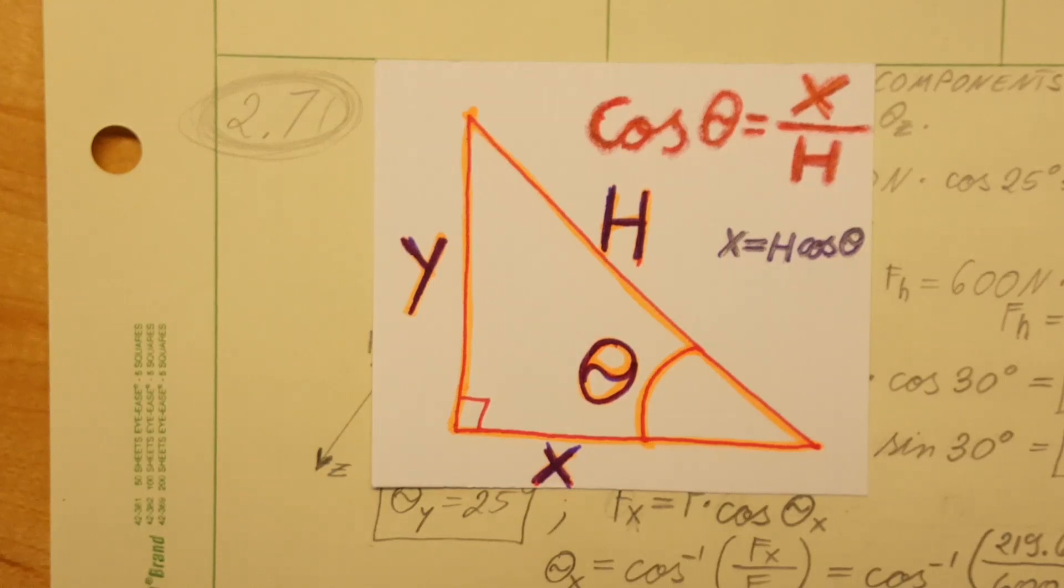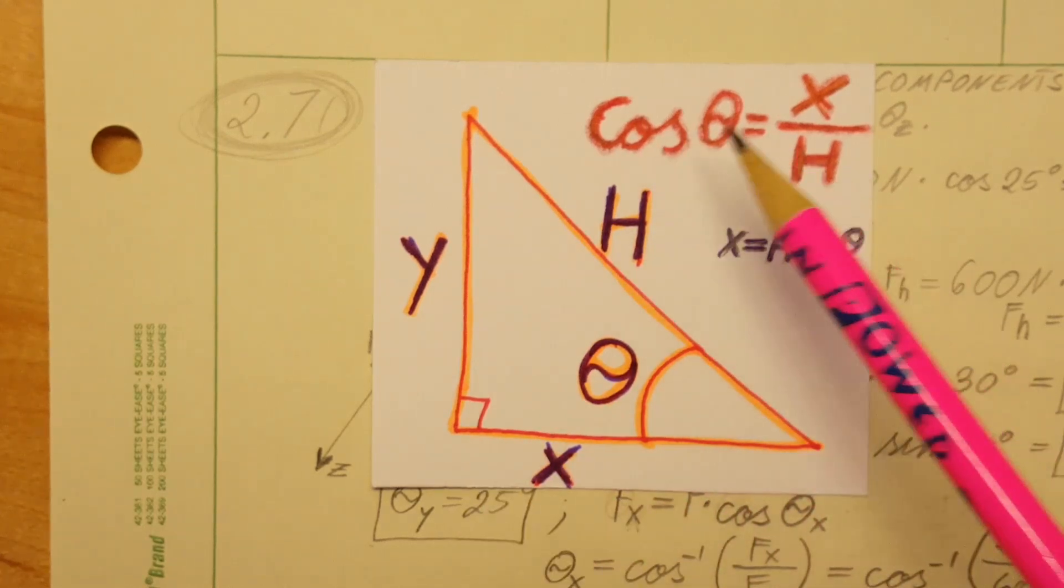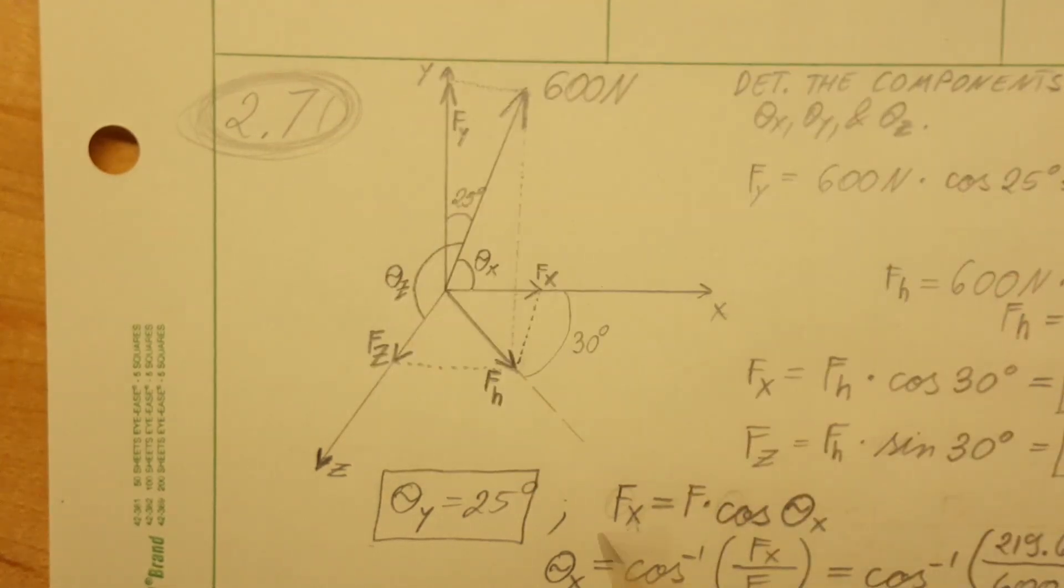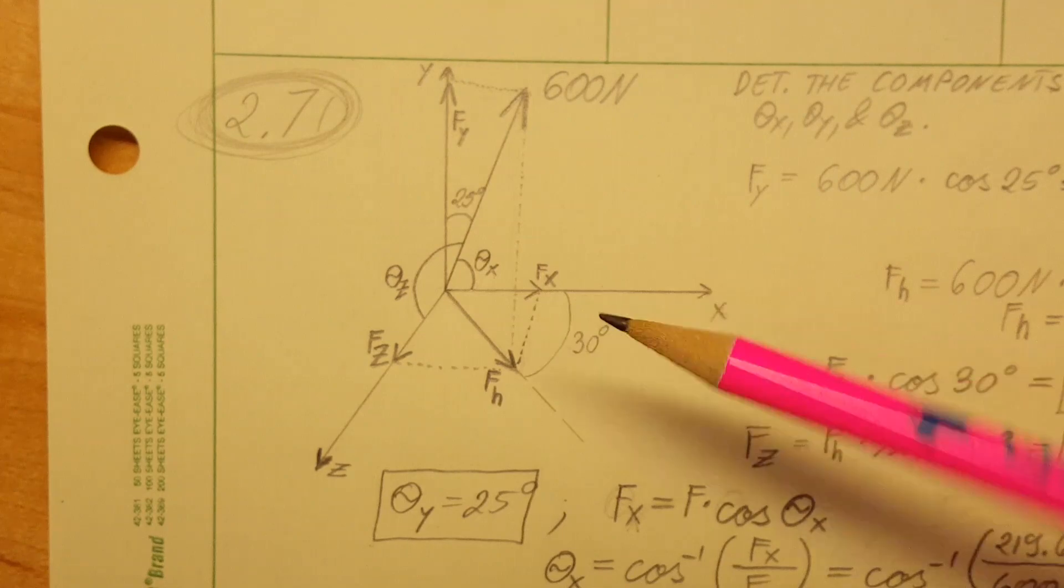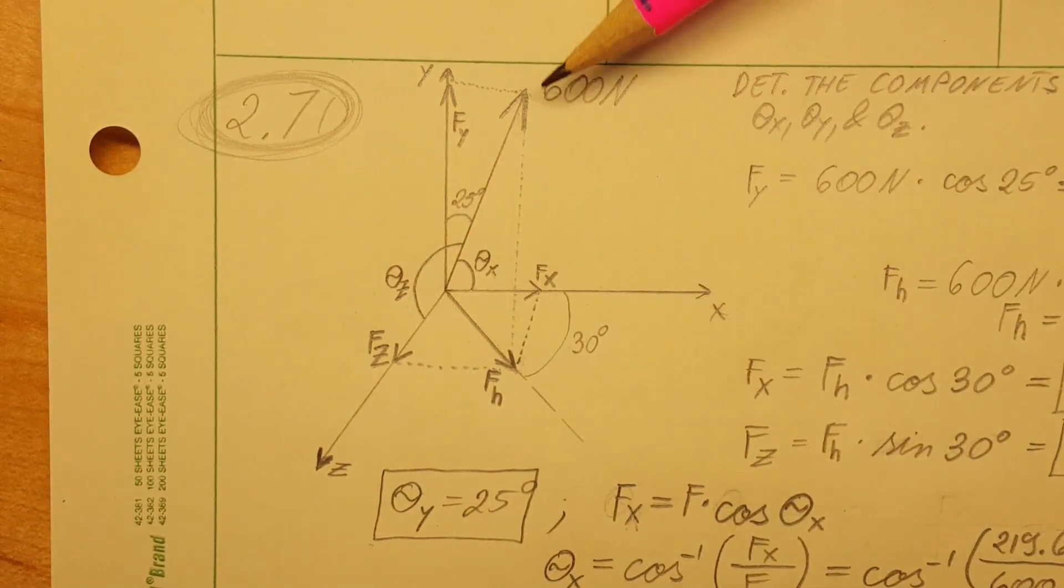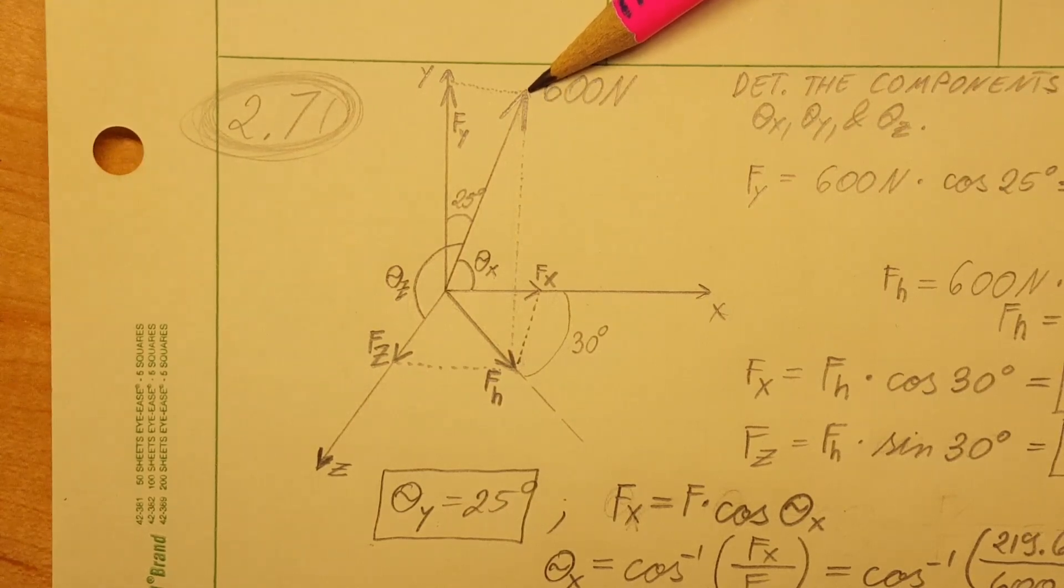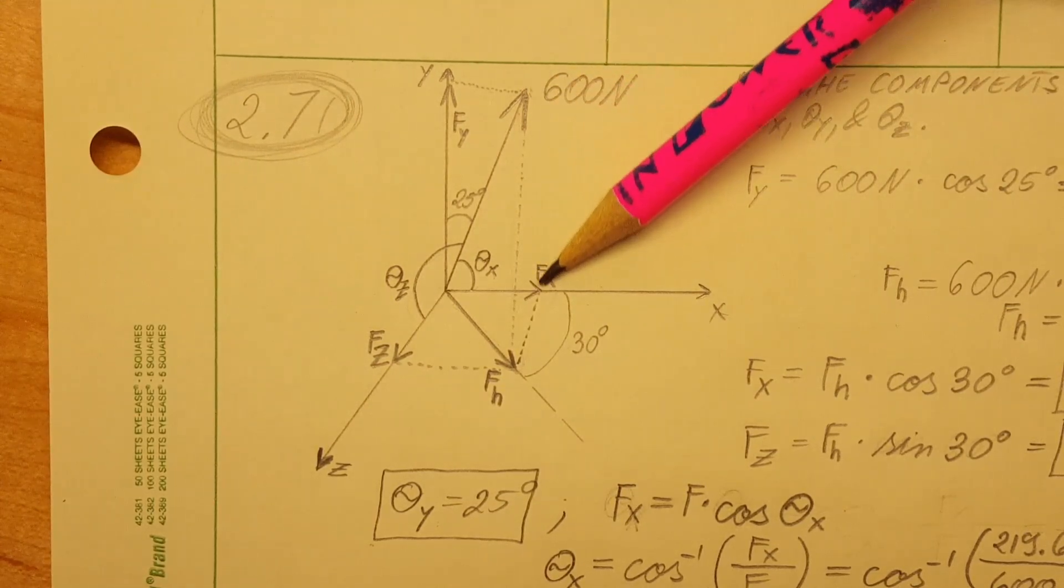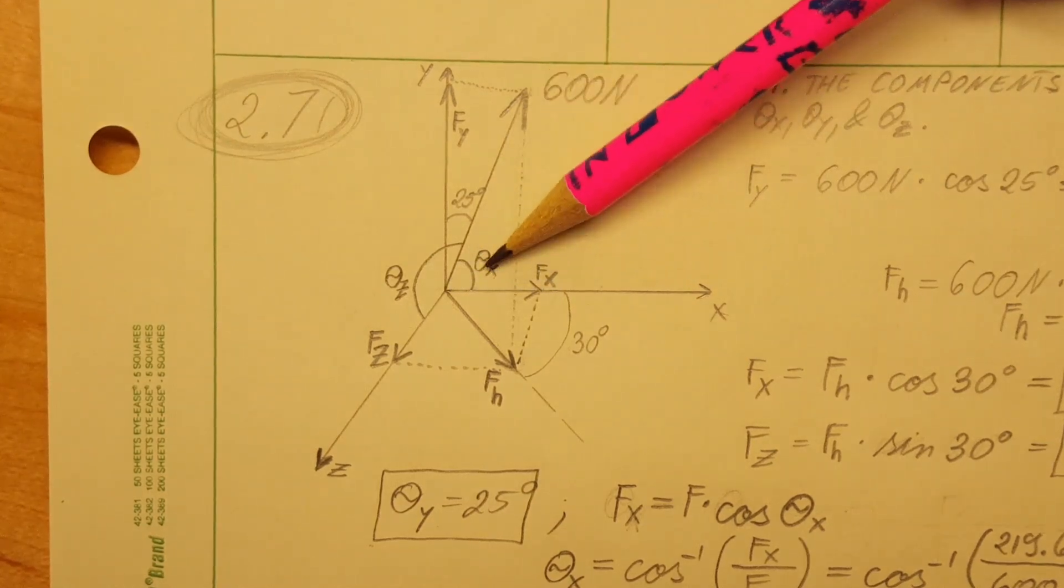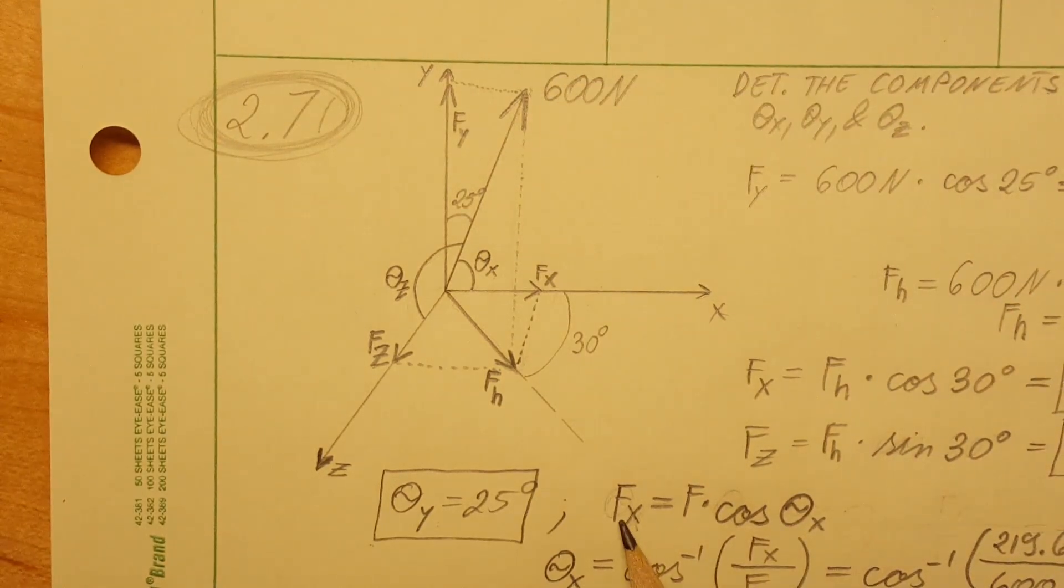Now let's work on finding theta x. We're going to use cosine again, but this time we're going to solve for theta. We're going to be using this triangle right here, the one coming from the tip of f down to our x-axis and then to the origin and up here where our theta x is.